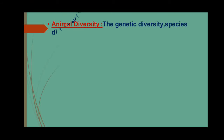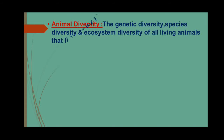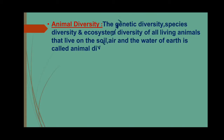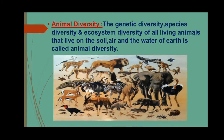At first, I am going to discuss with you about animal diversity. The word diversity means variety. The genetic diversity, species diversity and ecosystem diversity of all living animals that live on the soil, air and the water of the earth is called animal diversity. In a simple sentence, animal diversity means diversity or variety between all the members of living animals.